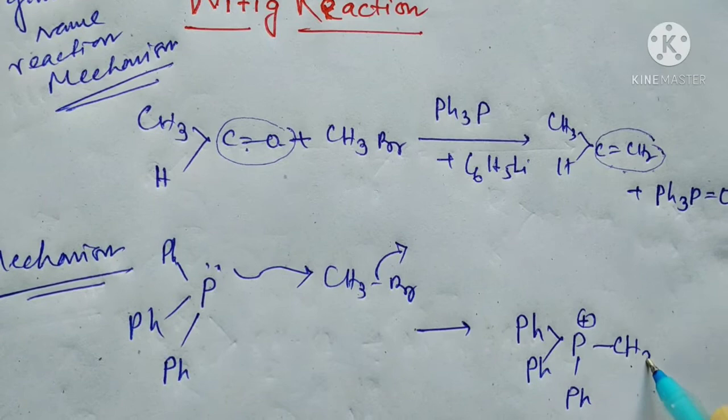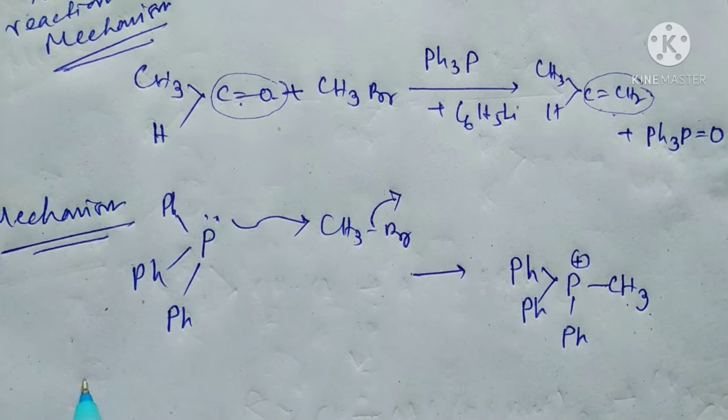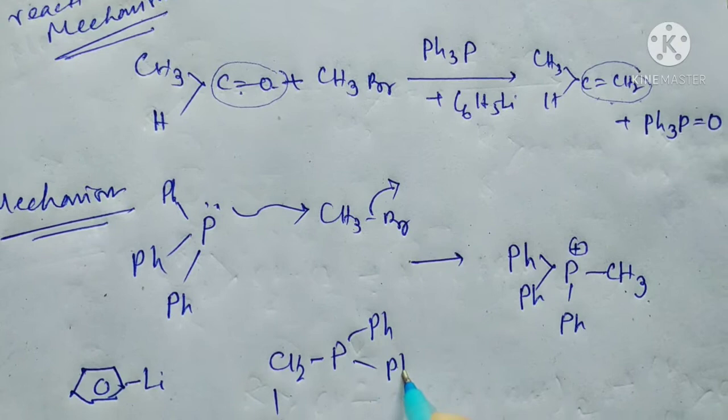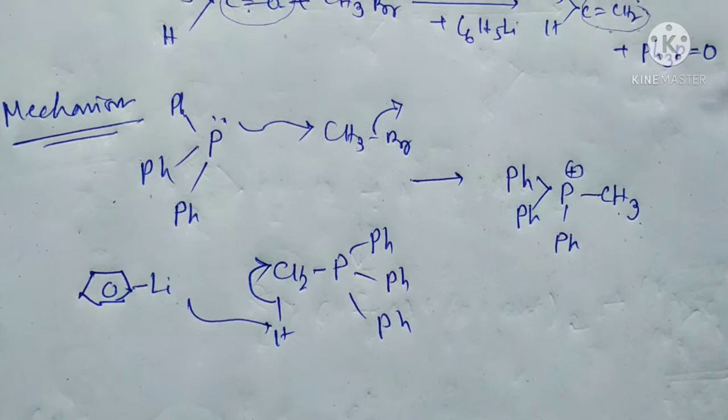In the next step, C6H5Li takes this hydrogen to form an anion. The carbanion is now formed. See the carbanion formation here.